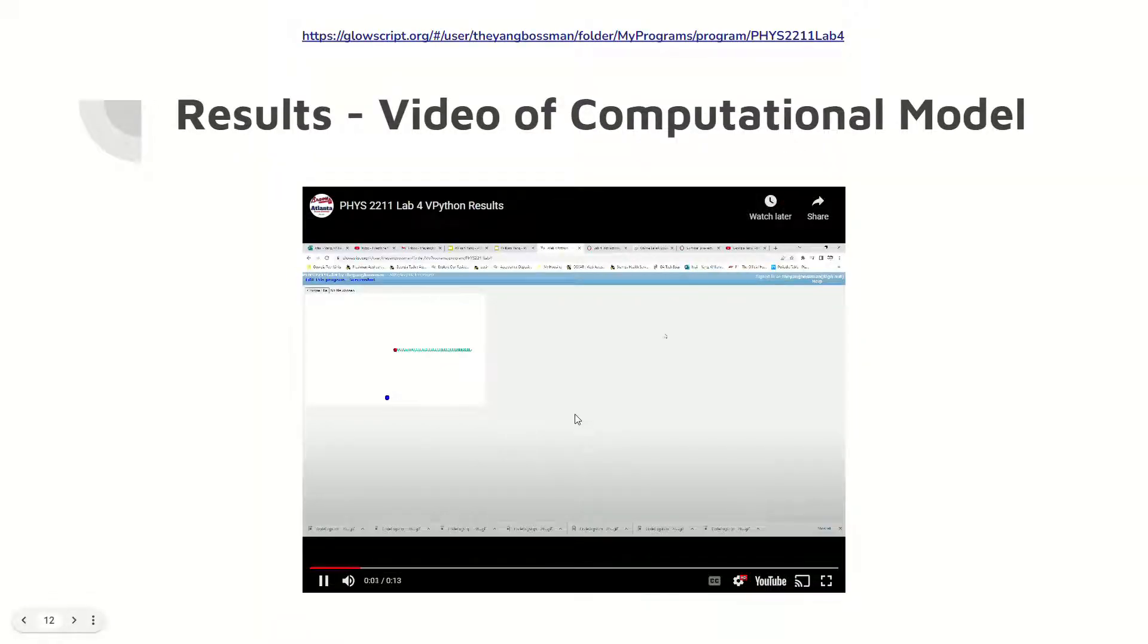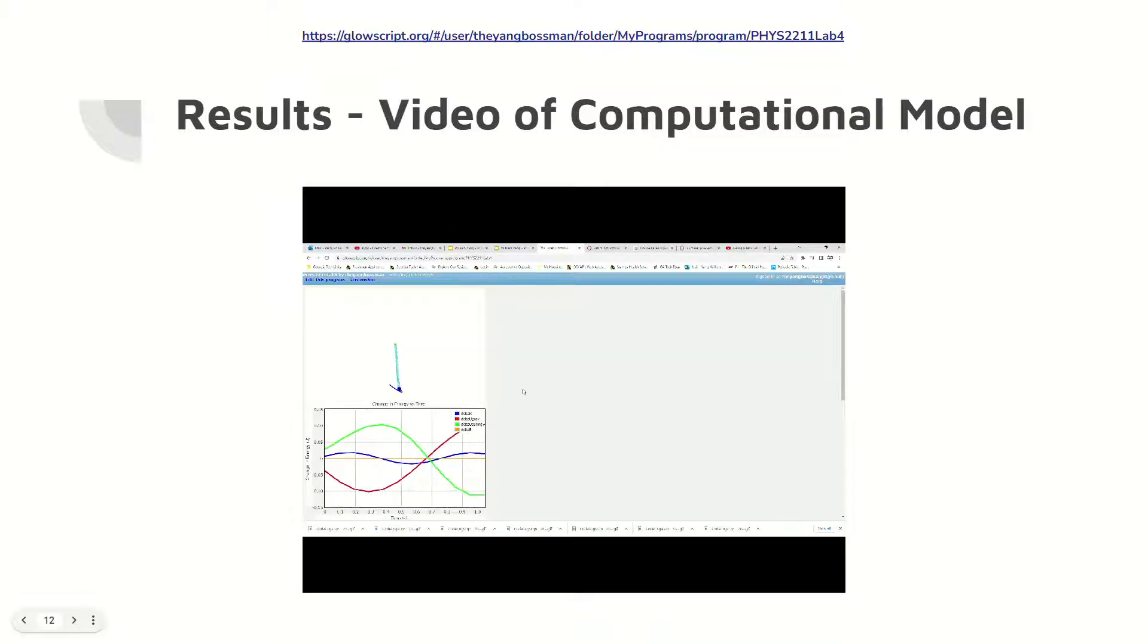Here are the video results for the computational model versus the observed tracker analysis. The object moves back and forth, creating an oscillating motion.